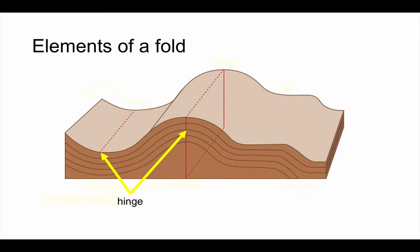Once we define the hinge of a fold, we can then start to recognize the limbs of the fold. Now a limb is the bed in between hinge points. So the bed that's been tilted and deformed in between these two hinge points.